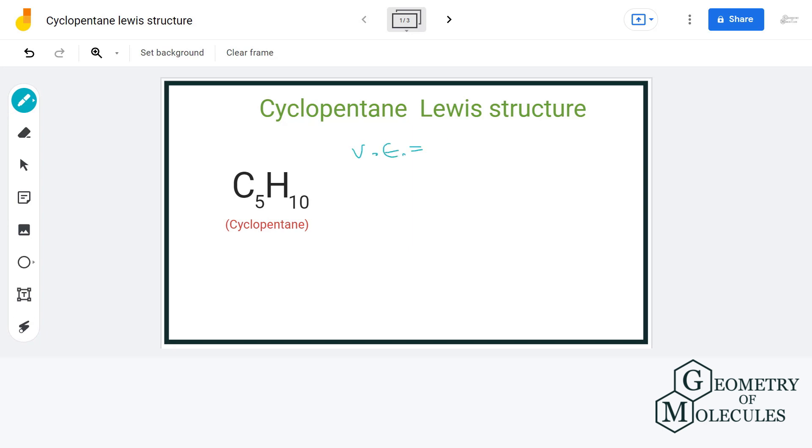That gives us a total of 30. Now cyclopentane is a compound of cyclo compounds in organic chemistry, and as the name suggests there will be a loop-like structure. Carbon atoms here will be arranged in such a way that they form a loop.